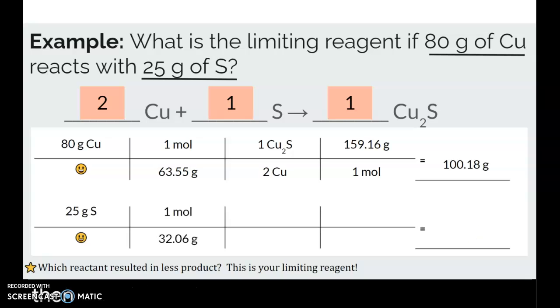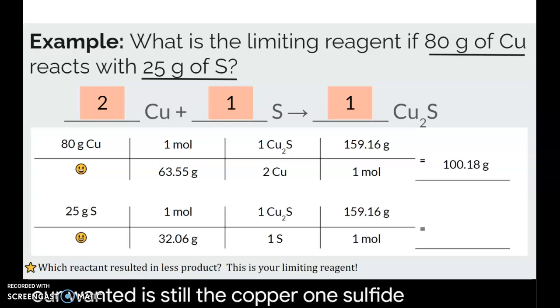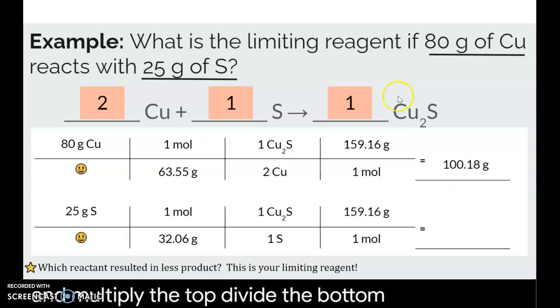And then the next different thing is just your numerator for this next step. The denominator. Or sorry, the denominator because our given is now sulfur instead of copper. But the rest of it is all the same because our wanted is still the copper 1-sulfide. So go ahead, multiply the top, divide the bottom, and see what you get.